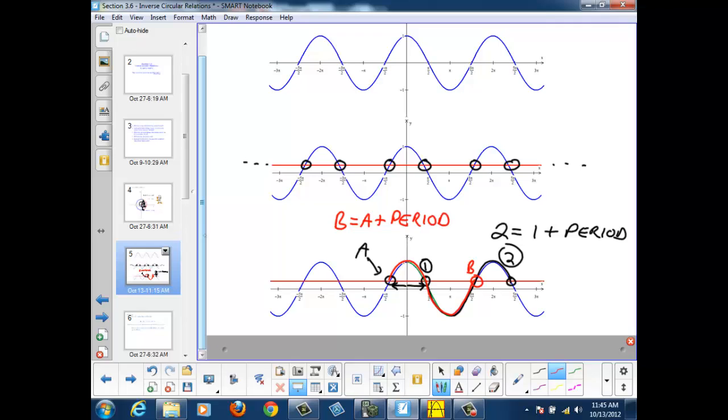So, I can start with my first solution generated off my principal branch, come up with a second solution through symmetry. And once I have those two initial solutions, I can then add or subtract periods to obtain all my other solutions.